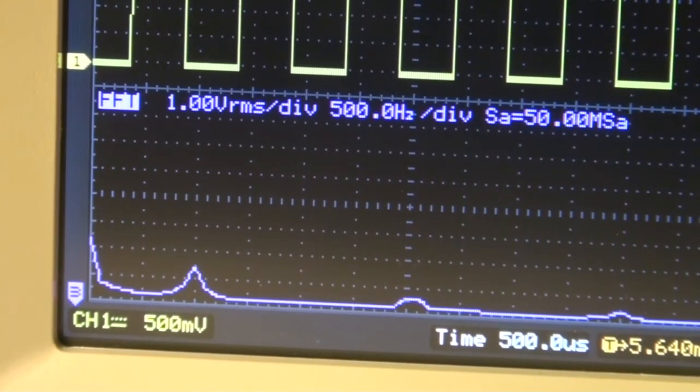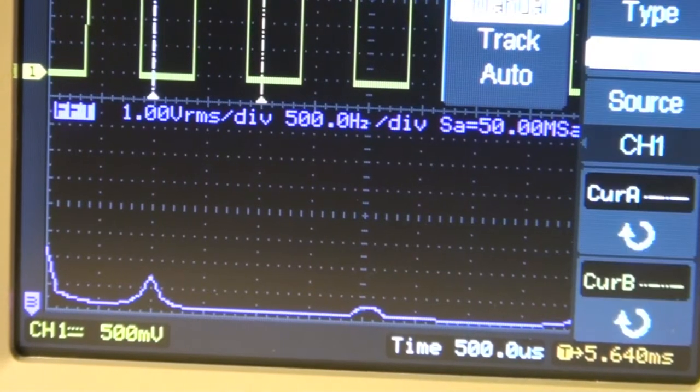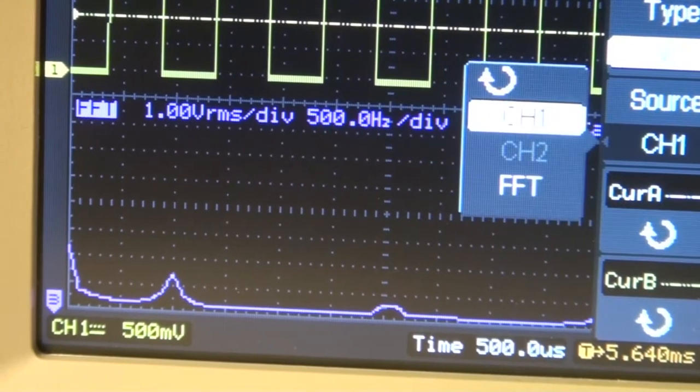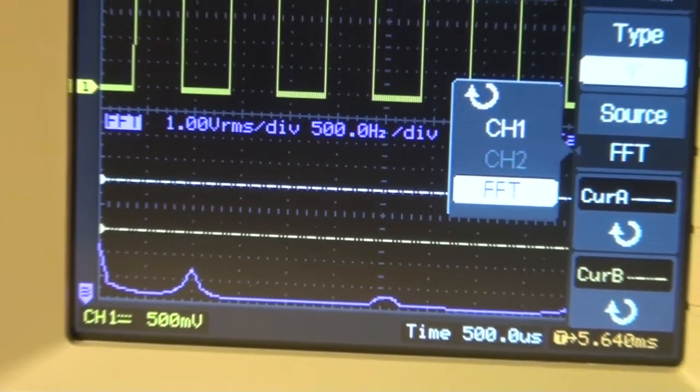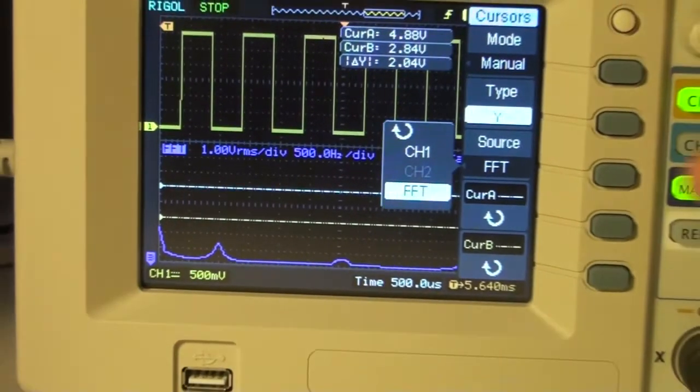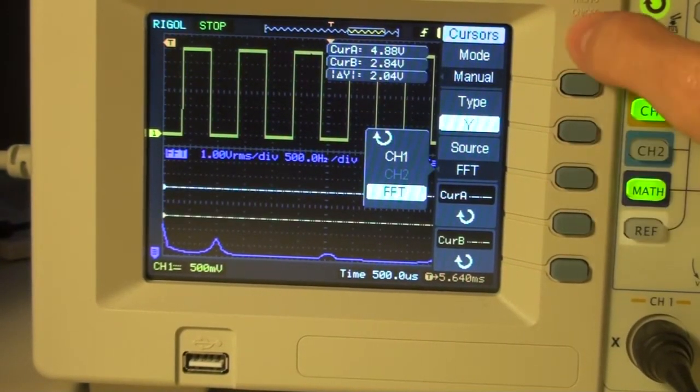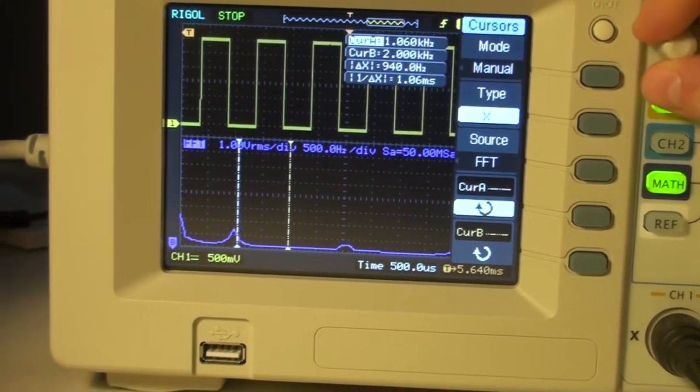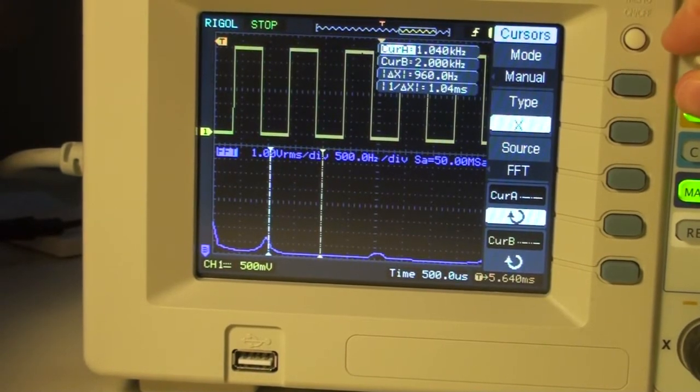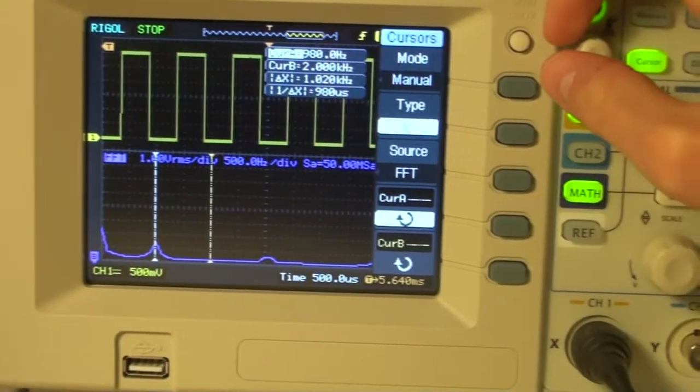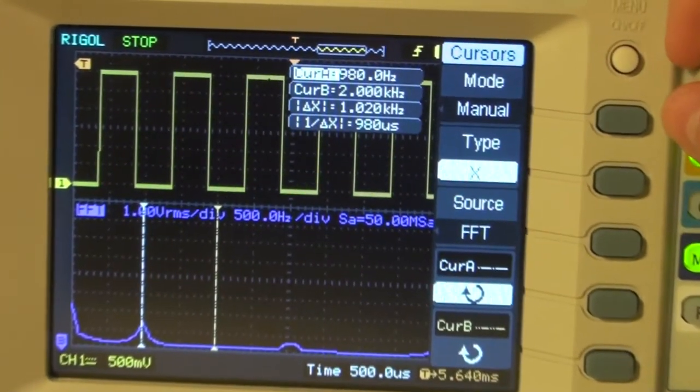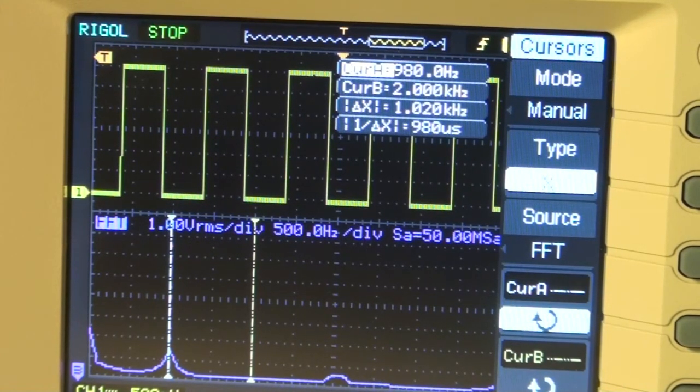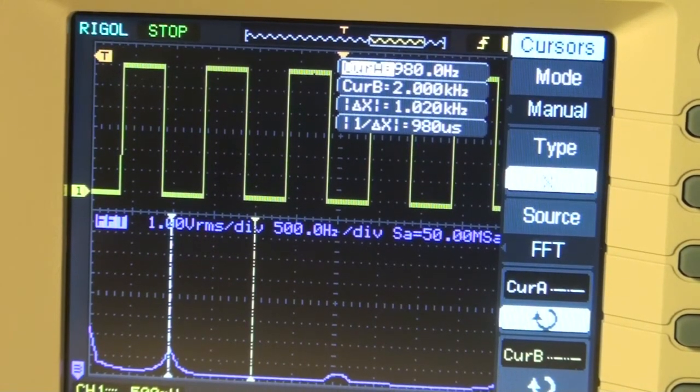We can enable the cursor as I told you before in manual, and then we can select that we would like to do it on the FFT analysis by pressing the source button and then selecting FFT. Now I'll change to X and you'll see that I can set the cursor to this mark. Then in the upper corner I can read that this is thousand kilohertz. So that is also the frequency we measured. This is great if you're measuring on sounds.